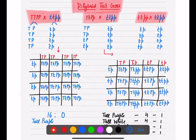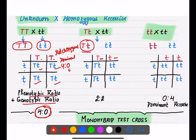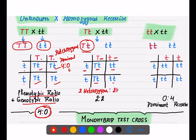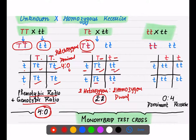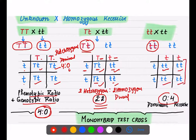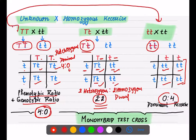If the unknown genotype is heterozygous, the checkerboard gives Tt, Tt, tt, tt — two heterozygous tall and two homozygous dwarf. The ratio is 2:2. If the unknown genotype is recessive, then the ratio will be 0:4 — no dominant, all recessive.